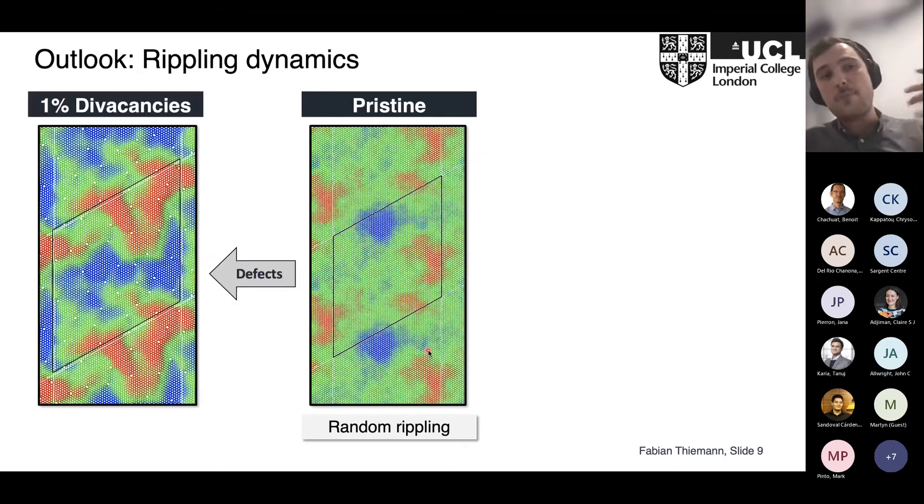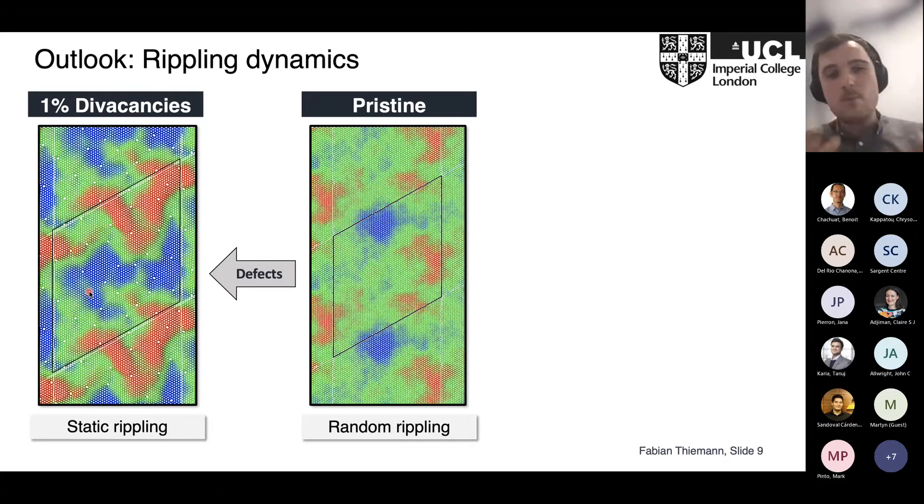If we then look at what happens when we introduce a large number of defects, shown here for one percent divacancies, we have a highly corrugated system, way more corrugated, but we have static rippling. There's no propagation anymore. The system is frozen—there was like a glass-like phase transition. This is interesting because that would suggest corrugation means ripples die, if you want to formulate it drastically.